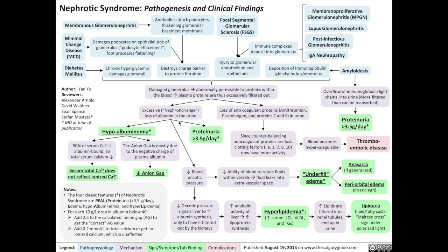Loss of albumin through the urine also reduces the oncotic pressure of the blood, resulting in a reduced ability to retain fluids within blood vessels. Fluid then leaks into the extravascular space, resulting in underfill edema. If this edema is generalized it's called anasarca. Sometimes it is localized to the periorbital areas, which is a classic sign of nephrotic syndrome.